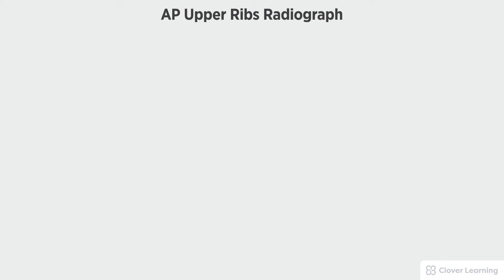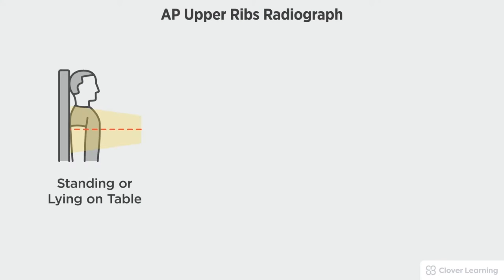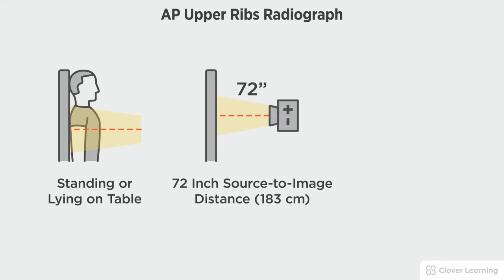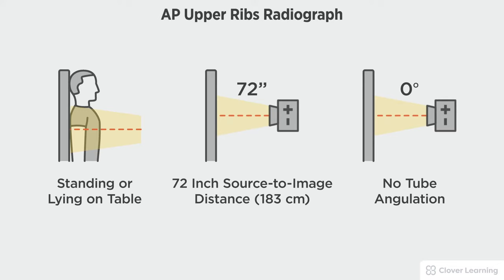In this view we will be demonstrating the AP upper ribs. The AP ribs above the diaphragm should be performed with the patient standing at the upright bucky or lying on a table, with a 72-inch source to image distance and no tube angulation.